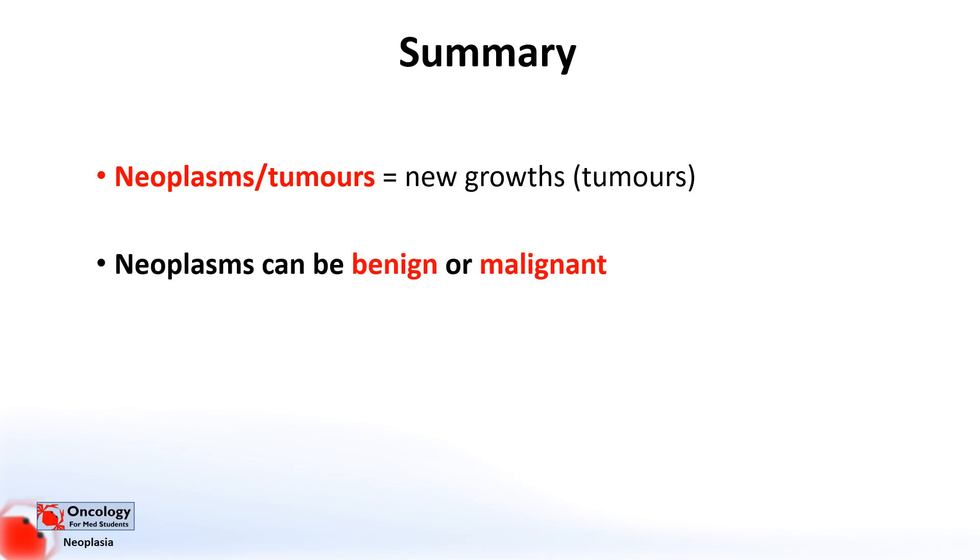So in summary, neoplasms or tumors are new growths that occur when a damaged cell starts dividing at a faster rate than its surrounding tissues. Neoplasms can be benign or malignant, the main difference being whether the tumor has the ability to grow into other tissues and spread to other parts of the body. These are properties of a malignant tumor. Cancer is a word used to describe these malignant neoplasms.